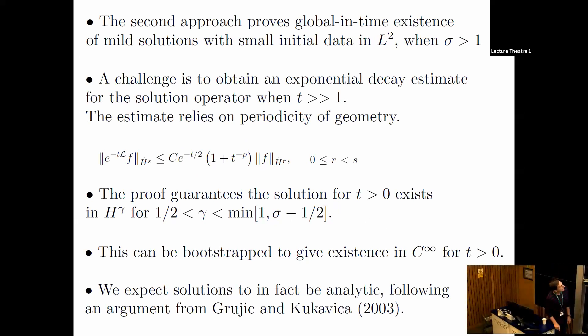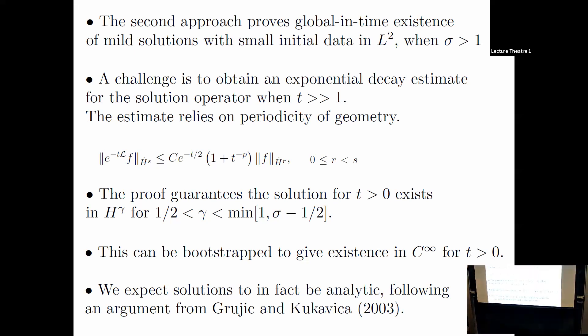Just a couple more slides. The second approach proves global-in-time existence for messier initial data—data in L2, so even rough data. But you lose a little: only when sigma is greater than one, not greater than or equal to. The challenge is to get an estimate on the H^S norm in terms of an H^R norm where S is bigger. For example, if R equals zero, this is just the L2 norm of F. You need an estimate on a norm with more derivatives in terms of a norm with less derivatives, which is usually fraught with difficulty, but I can use dissipation here and do it.